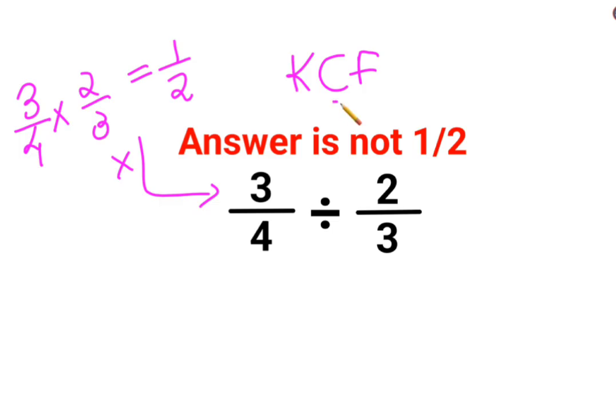When you have division, you need to follow the rule of KCF. K stands for keeping the first number as it is. C stands for changing the division sign to multiplication. F stands for flipping or taking the reciprocal of 2/3, which is 3/2.